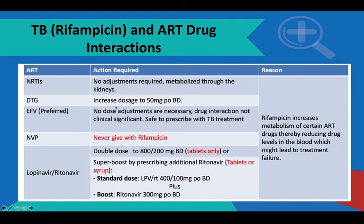Dolutegravir: the dose changes from 50 milligrams daily to 50 milligrams BD. You'll give TLD in the morning and the additional 50 milligrams at night.